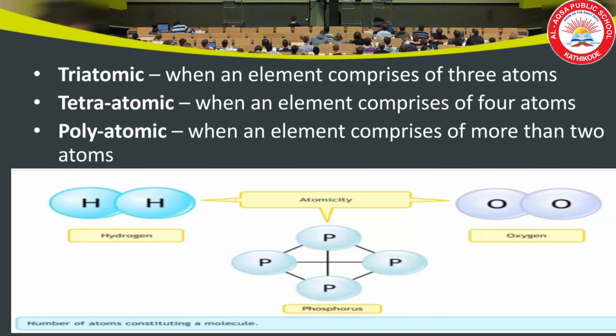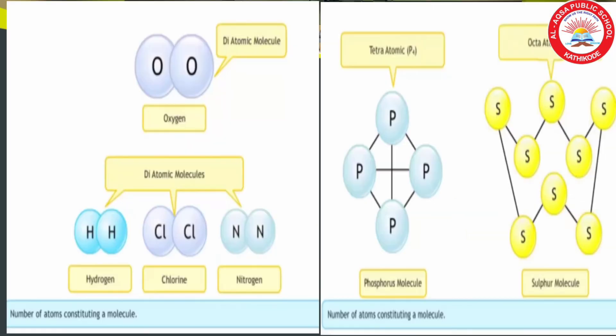Here you can see the element hydrogen. A molecule of hydrogen consists of two atoms, so it is diatomic. Another example is phosphorus — a molecule of phosphorus consists of four phosphorus atoms, so its atomicity is four. Oxygen consists of two atoms, so its atomicity is two. Sulfur molecule consists of eight atoms, so its atomicity is eight. So I think it's clear for you.